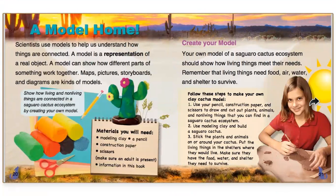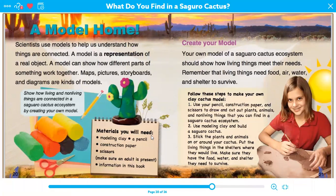A model home — and this could be something you'd want to try this week. Scientists use models to help us understand how things are connected. A model is a representation of a real object that can show how different parts of something work together. Maps, pictures, storyboards, and diagrams are all kinds of models. As you can see here, they used clay and made a cactus. I would love to see you do that this week and take a picture of it and post it on ClassDojo. Make it colorful with the little flowers!